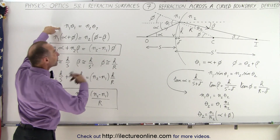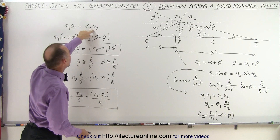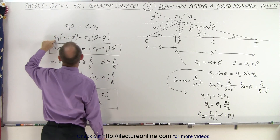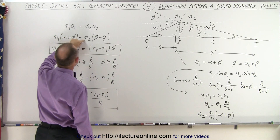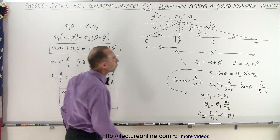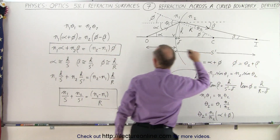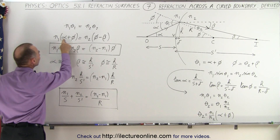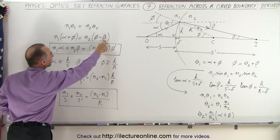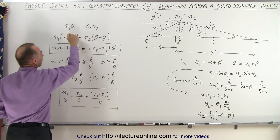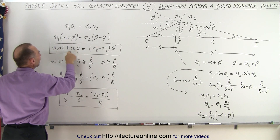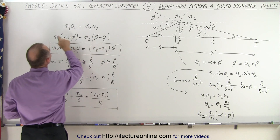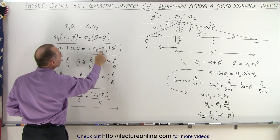Back to simplified Snell's law: n1 times theta 1 equals n2 times theta 2. Substituting, we write n1 times (alpha plus phi) equals n2 times (phi minus beta). Rearranging terms gives n1 alpha plus n2 beta equals n2 times phi minus n1 times phi, which equals (n2 minus n1) times phi.